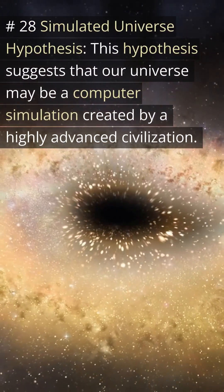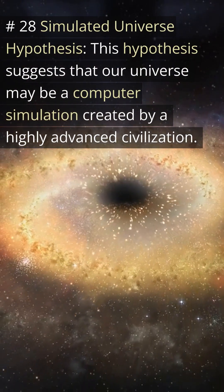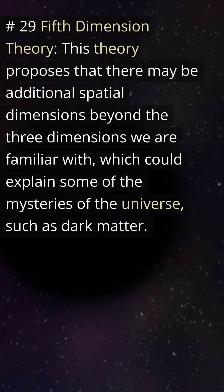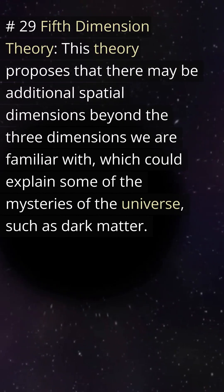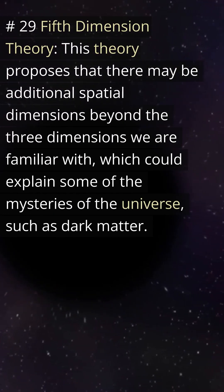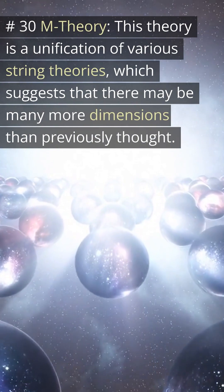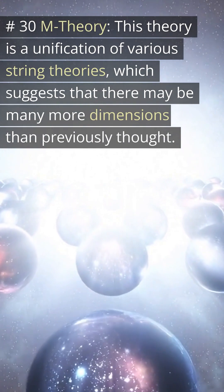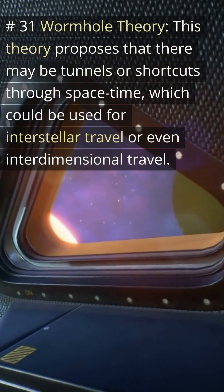Number twenty-eight: simulated universe hypothesis — this hypothesis suggests that our universe may be a computer simulation created by a highly advanced civilization. Number twenty-nine: fifth dimension theory — this theory proposes that there may be additional spatial dimensions beyond the three we are familiar with, which could explain some mysteries of the universe such as dark matter. Number thirty: M-theory — this is a unification of various string theories, suggesting that there may be many more dimensions than previously thought.